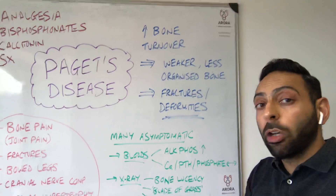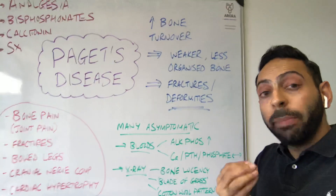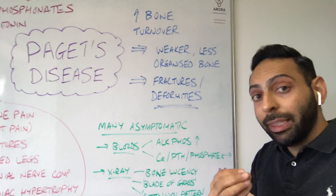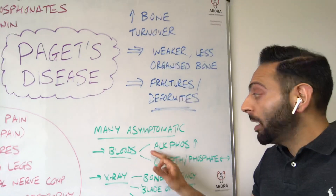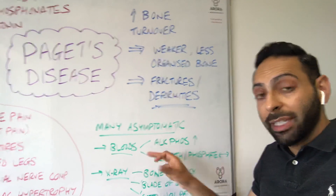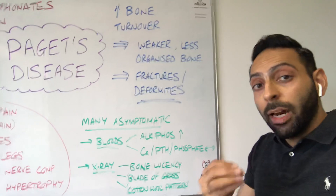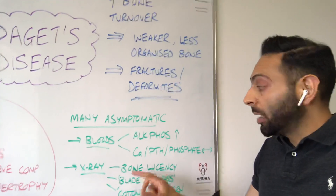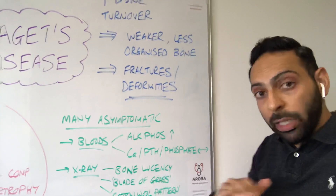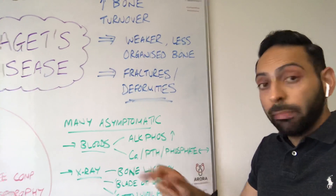Most patients who present don't have any symptoms whatsoever — you may pick it up simply on blood tests. The key thing to remember is a very high ALK-phos. Alkaline phosphatase is high, but the other bone-related bloods are generally normal: calcium, PTH, and phosphate are normal, but ALK-phos is raised.